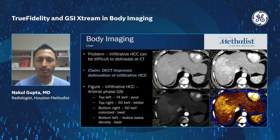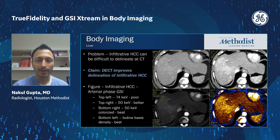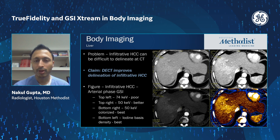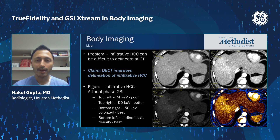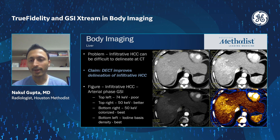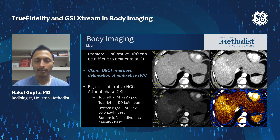Switching gears to GSI Extreme: liver imaging is a big use case of GSI, or dual energy CT. The image layout shows a 120 kVp-equivalent mono-energetic image at 74 keV, a 50 keV mono-energetic image, the same 50 keV image with a color map applied, and an iodine image. On the 120 kVp image, there's a very subtle area of hypervascularity in the right hepatic lobe that's very hard to delineate. It becomes much more conspicuous at 50 keV — especially with the color map applied — and is very easy to delineate on the iodine map.